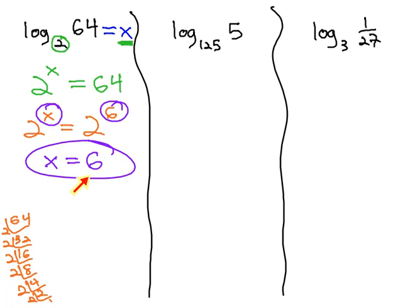Let's try another example, where we do that same thing. We make it equal to x, and then we convert. Log base 125 of 5, let's make that equal x. Well, if we convert, 125's the base of the logarithm, it's the base of the exponential. And the logarithm equals the exponent, so to the x power equals 5.